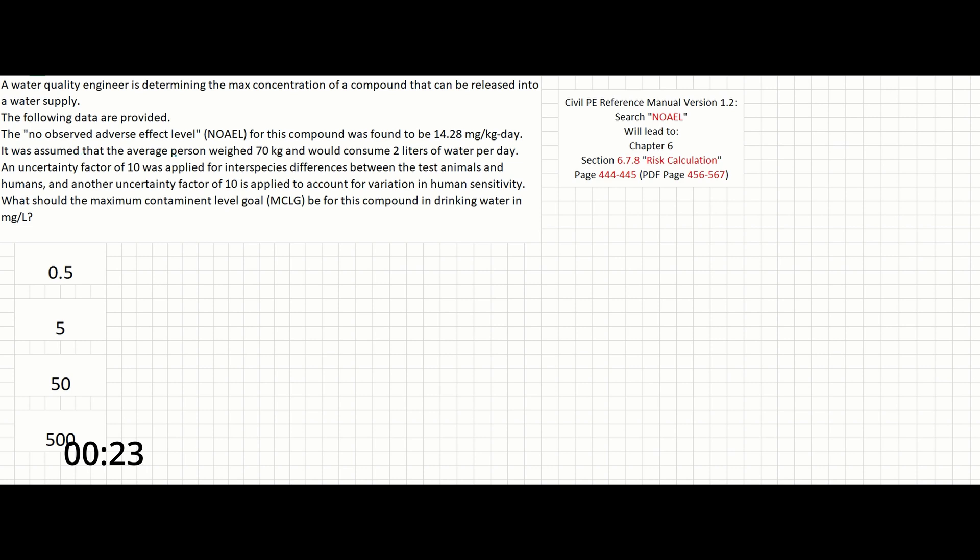It was assumed that the average person weighed 70 kg and would consume 2 liters of water per day. An uncertainty factor of 10 was applied for interspecies differences between the test animals and humans, and another uncertainty factor of 10 is applied to account for variation in human sensitivity.